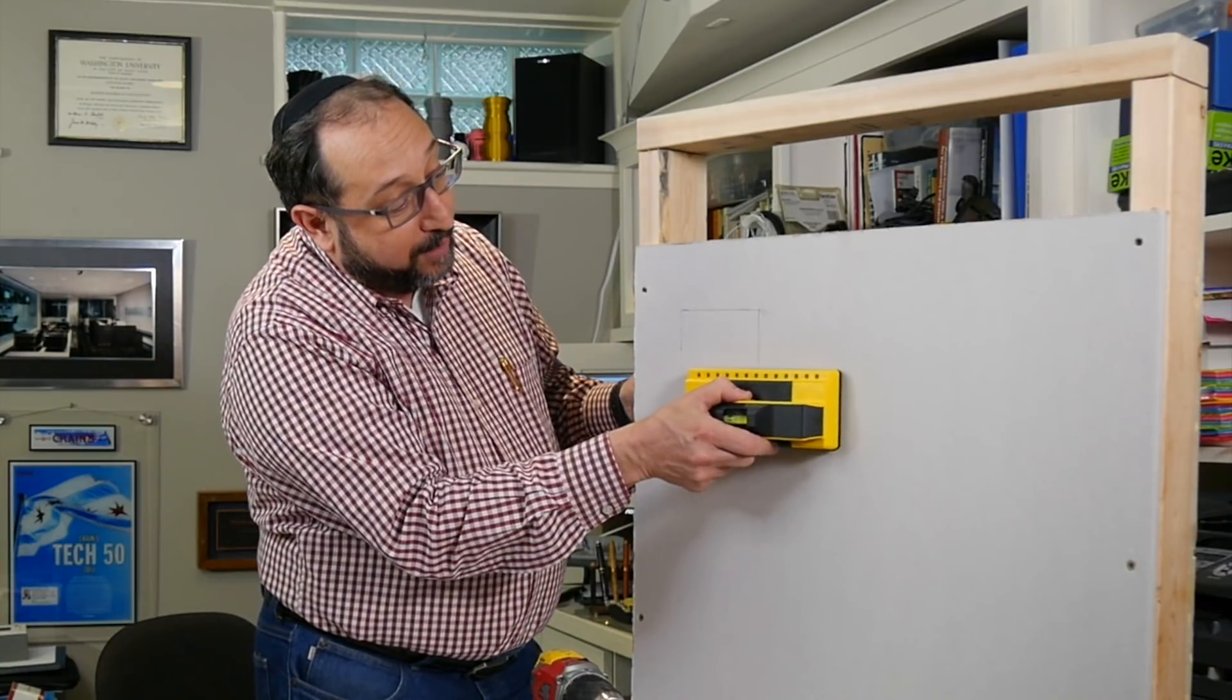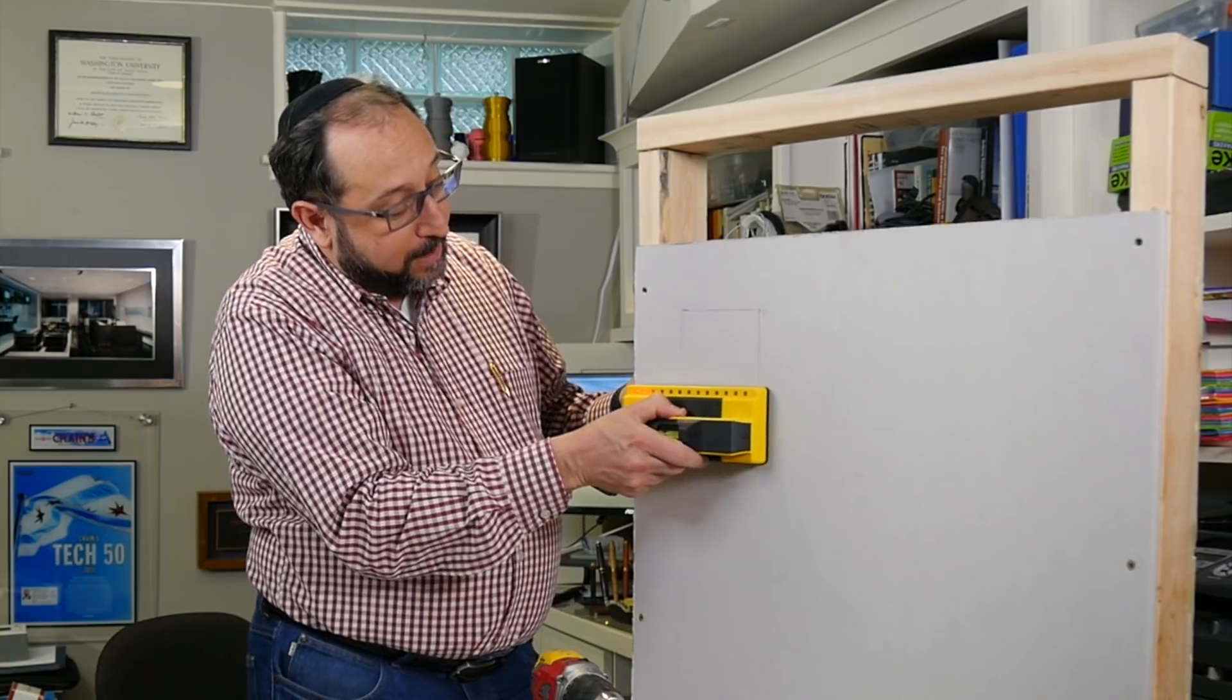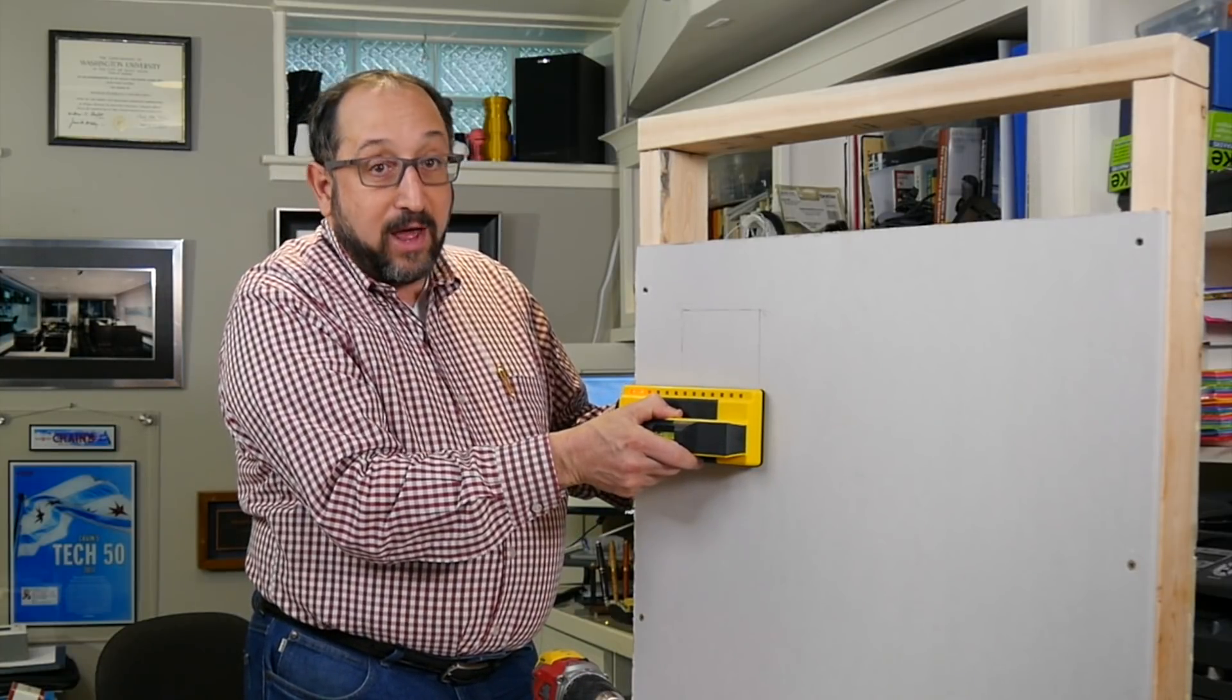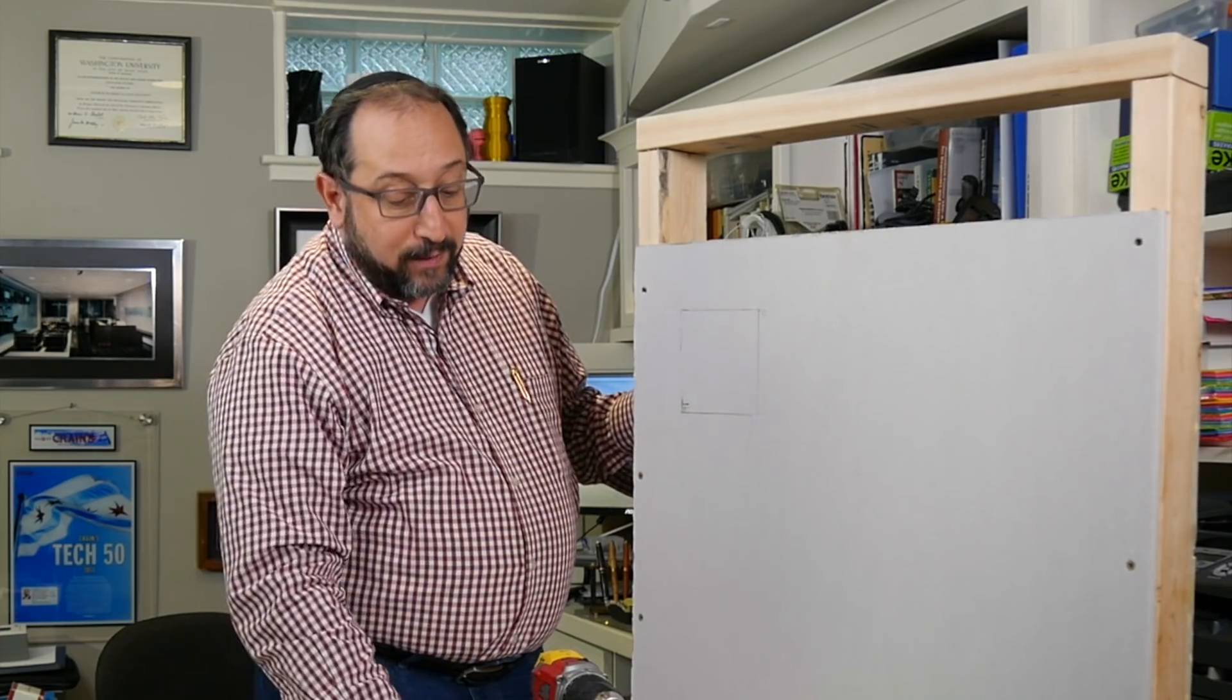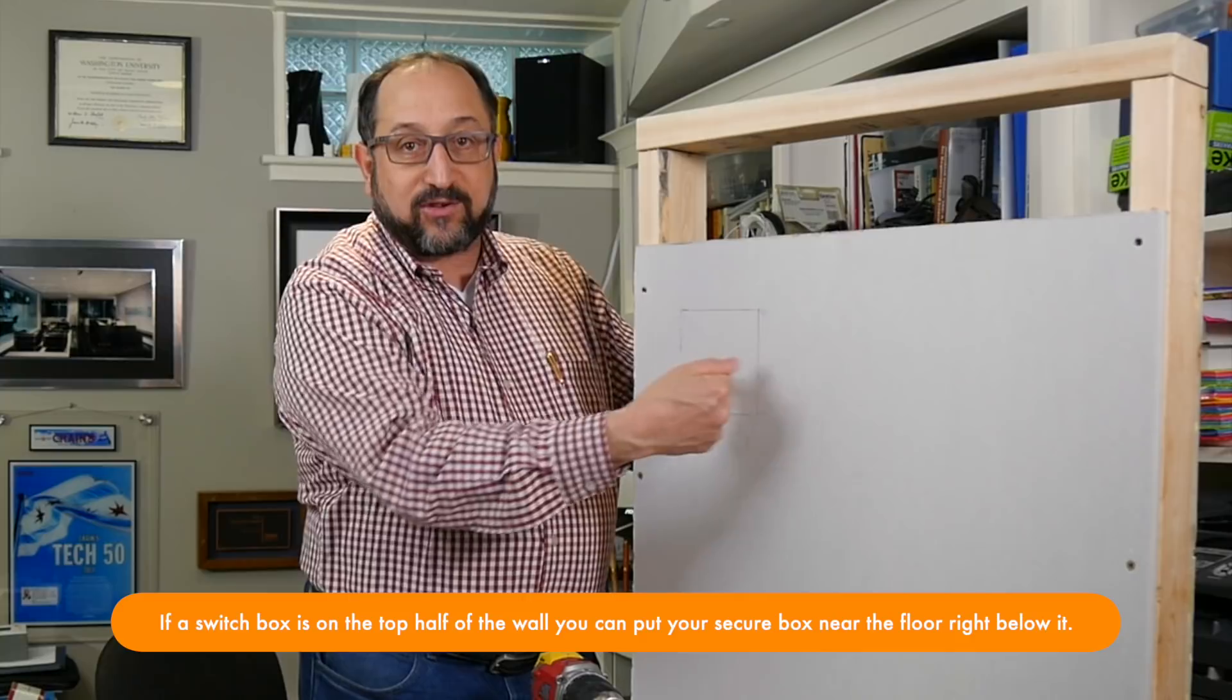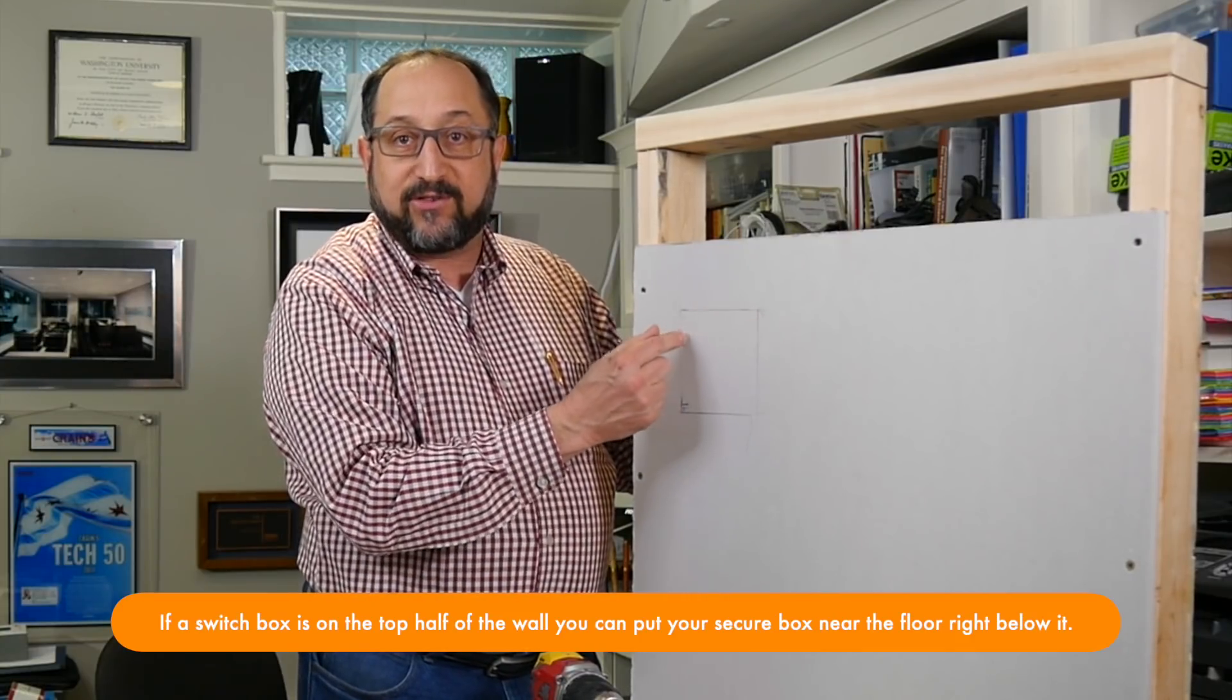Now you won't be able to see this framing lumber when you're looking at your wall, so one of the ways to find where that framing lumber is is to use a stud detector. I have one here. Another way is just to look for an existing switch box. Generally switch boxes are screwed into the side of studs, so that'll give you an idea of where the studs are.